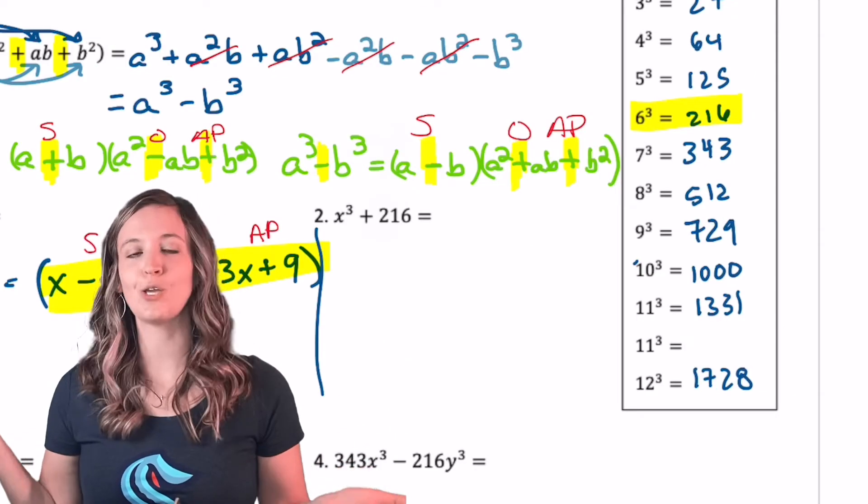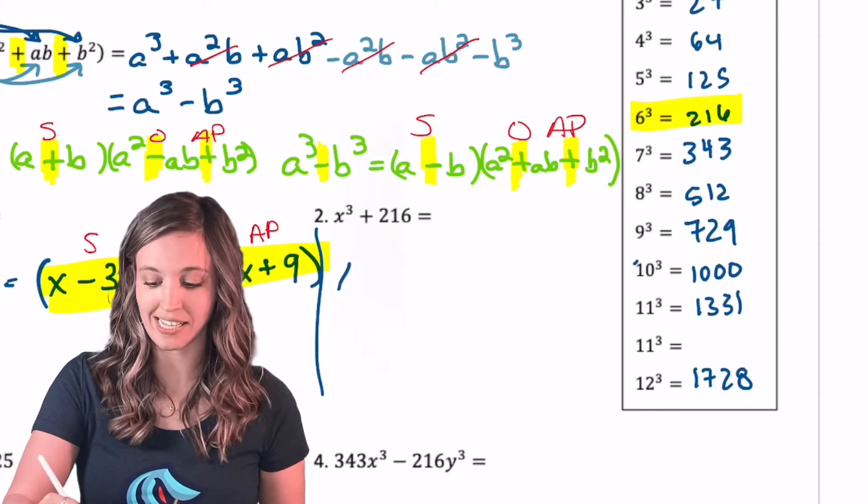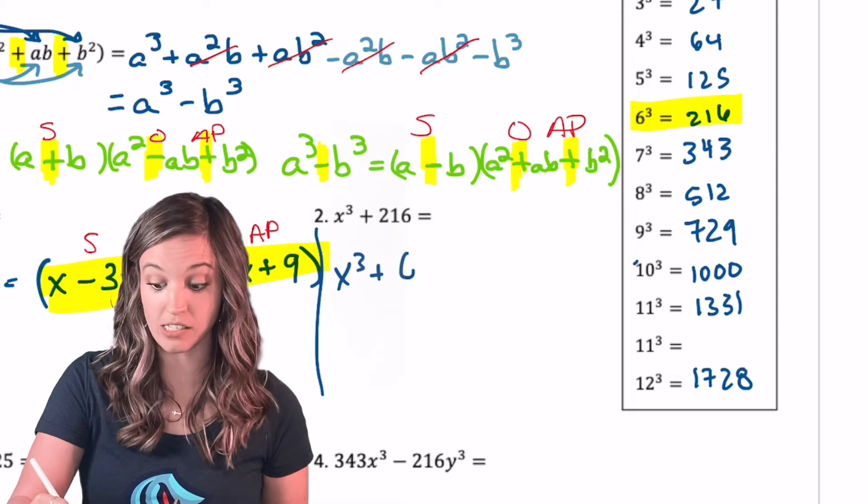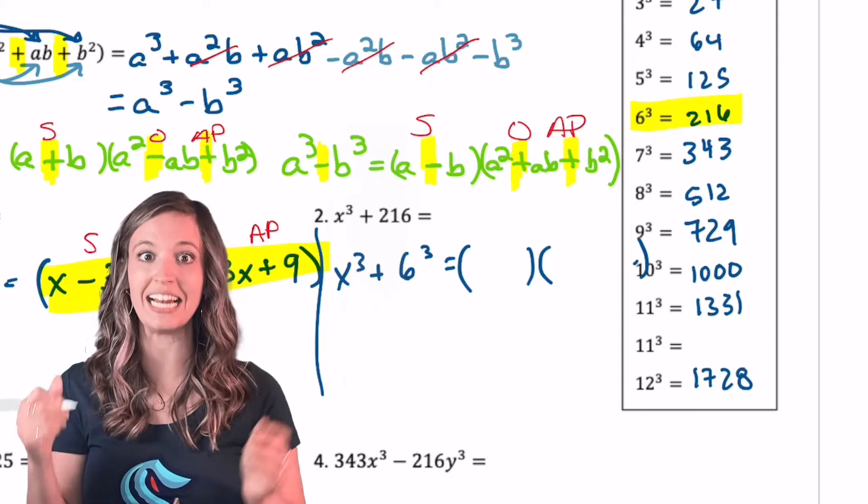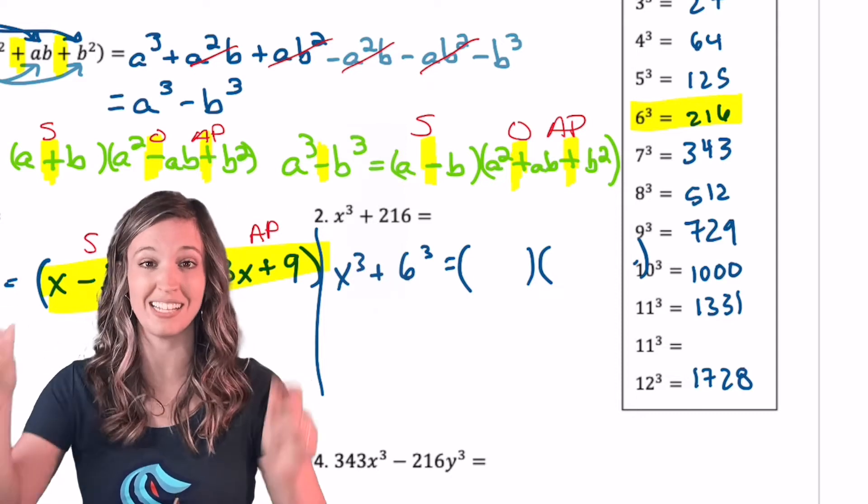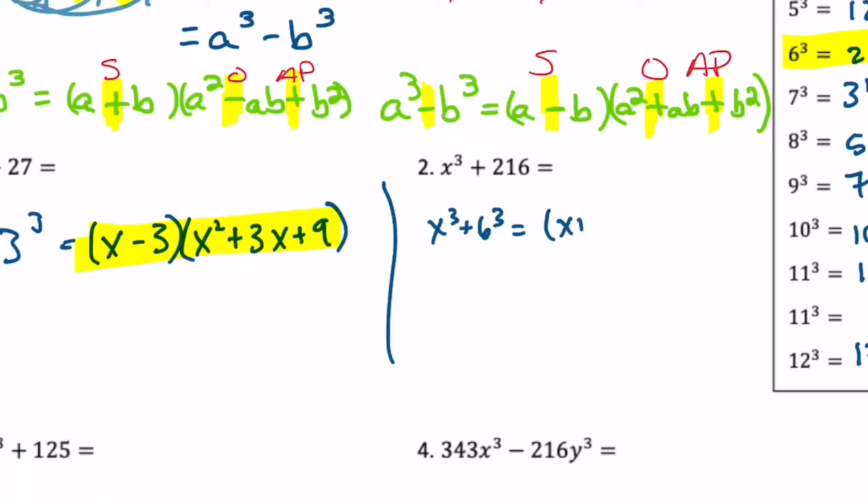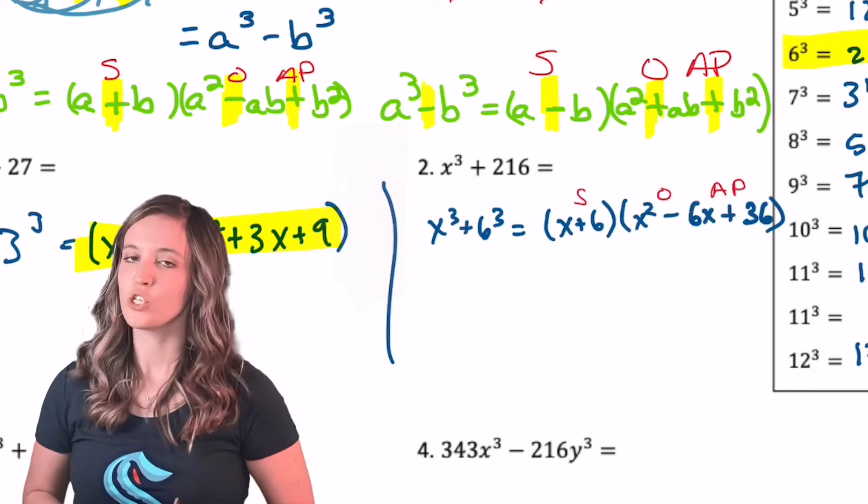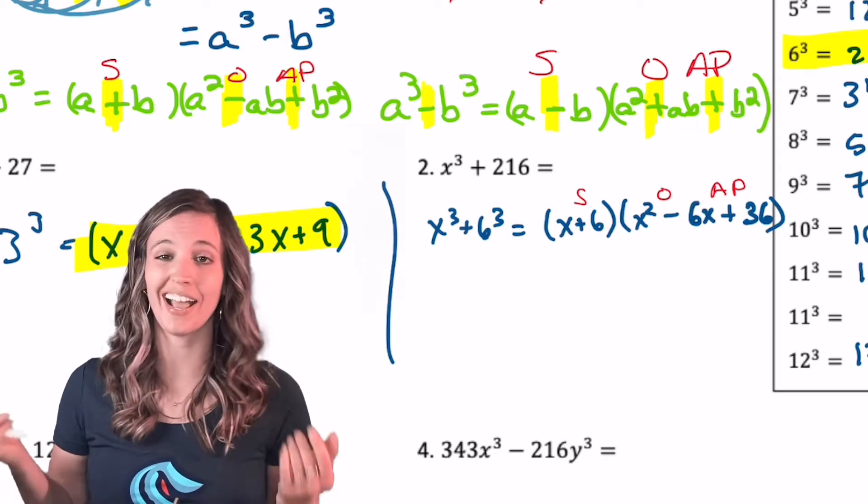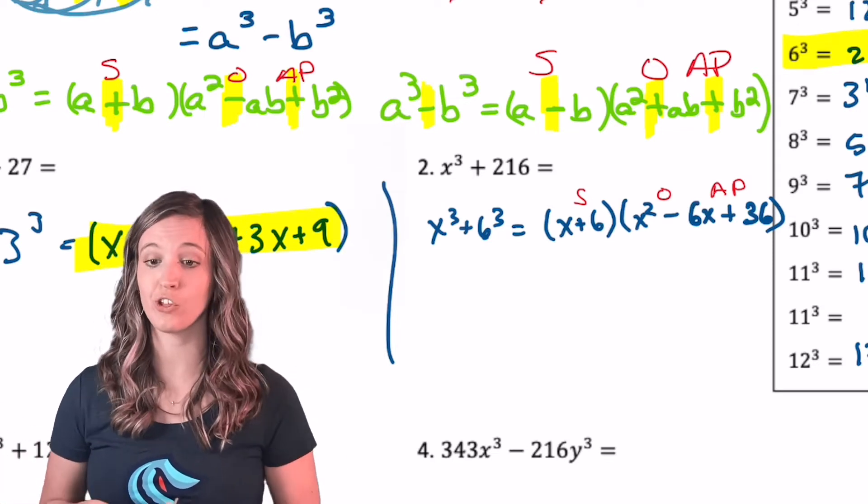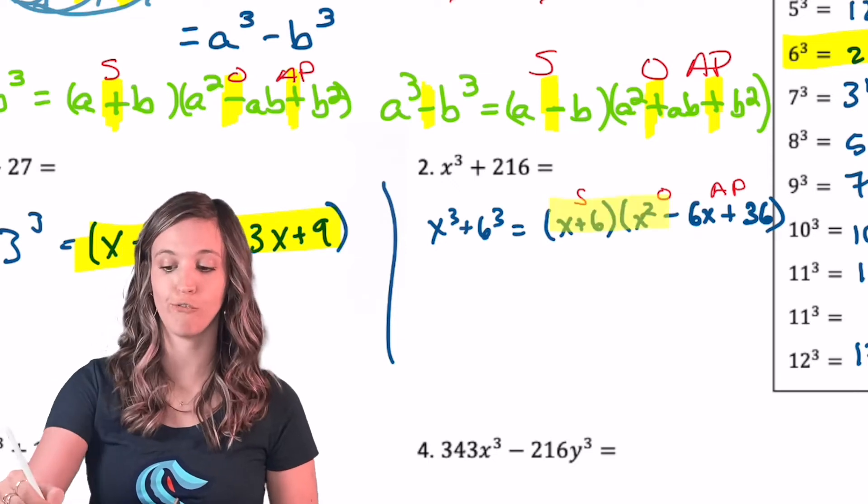Well, it looks like six cubed is 216. So I can write this as x cubed plus six cubed equals, and now I got my binomial trinomial, being sure I say that, same opposite always positive from my signs. Go factor it. So x plus six times x squared minus six x plus 36.